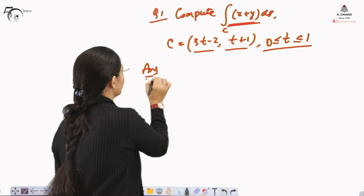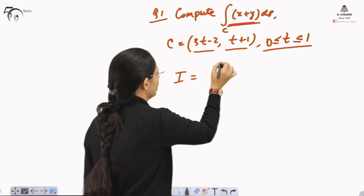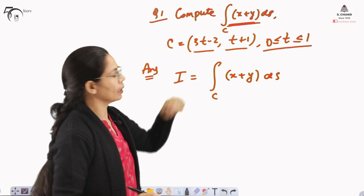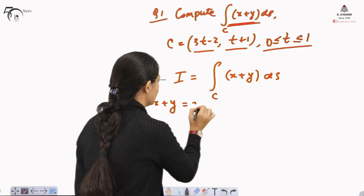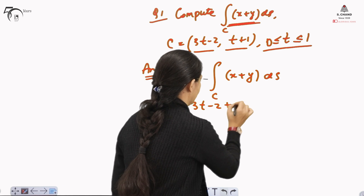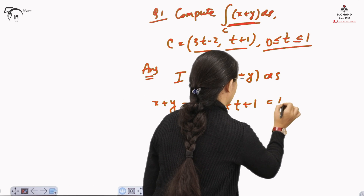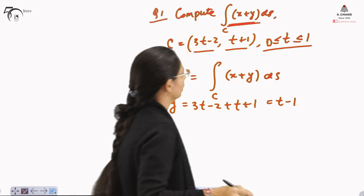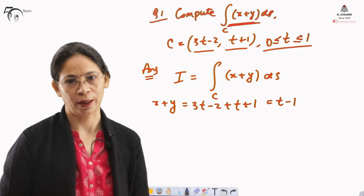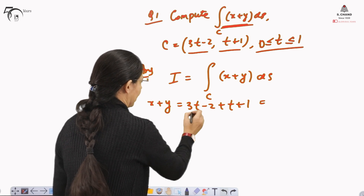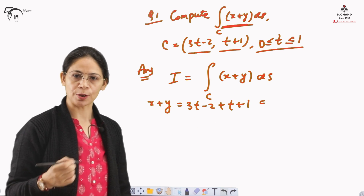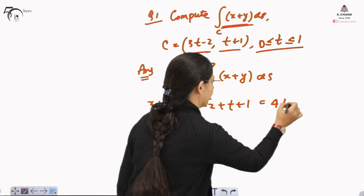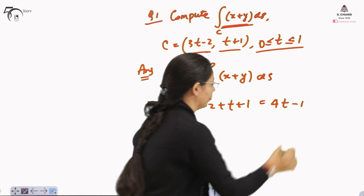To compute this integration ∫C (x + y) dS, X will be substituted as 3T − 2. So the integrand x + y becomes (3T − 2) + (T + 1). The limit for T has already been given as 0 to 1. We have written x + y as 3T − 2 for X in terms of T and T + 1 for Y in terms of T. Adding these, this becomes 4T − 1, which is the integrand of our integral.